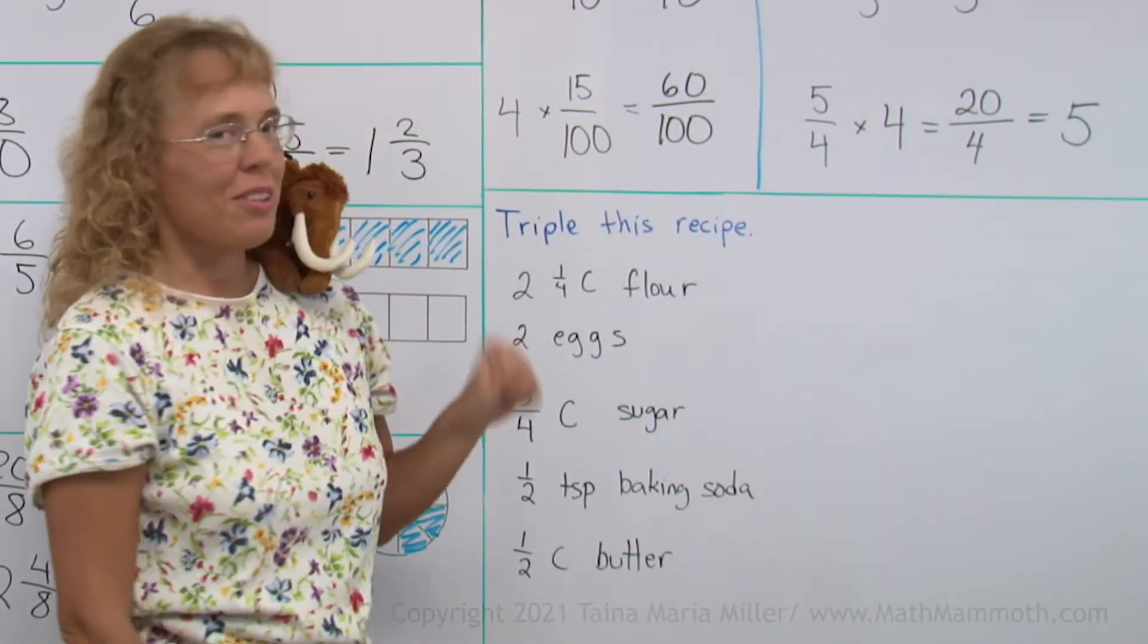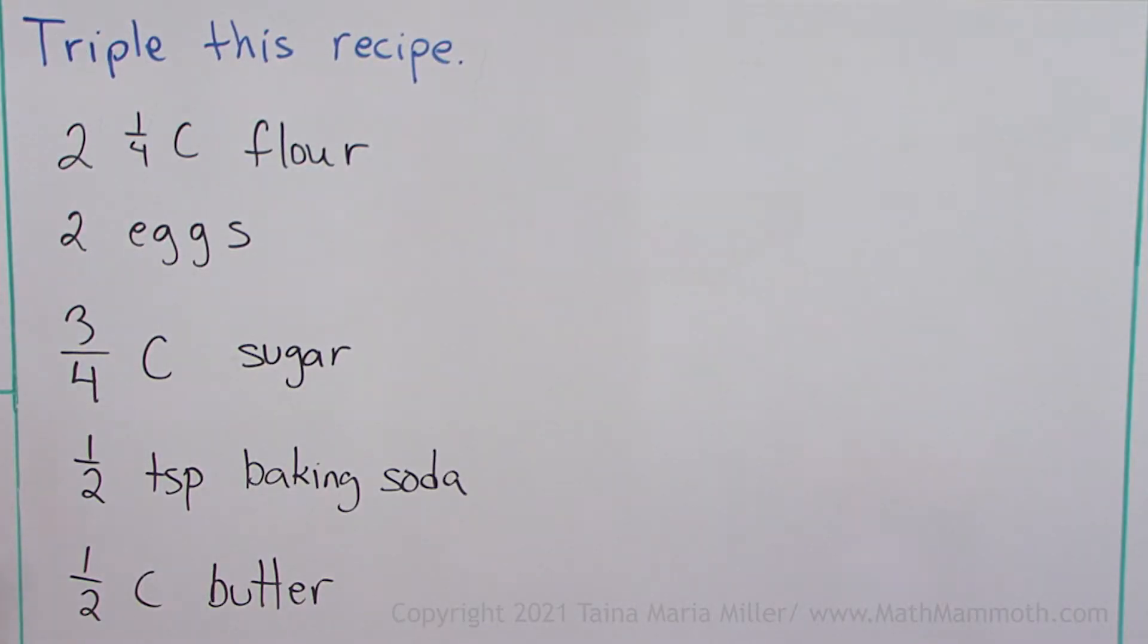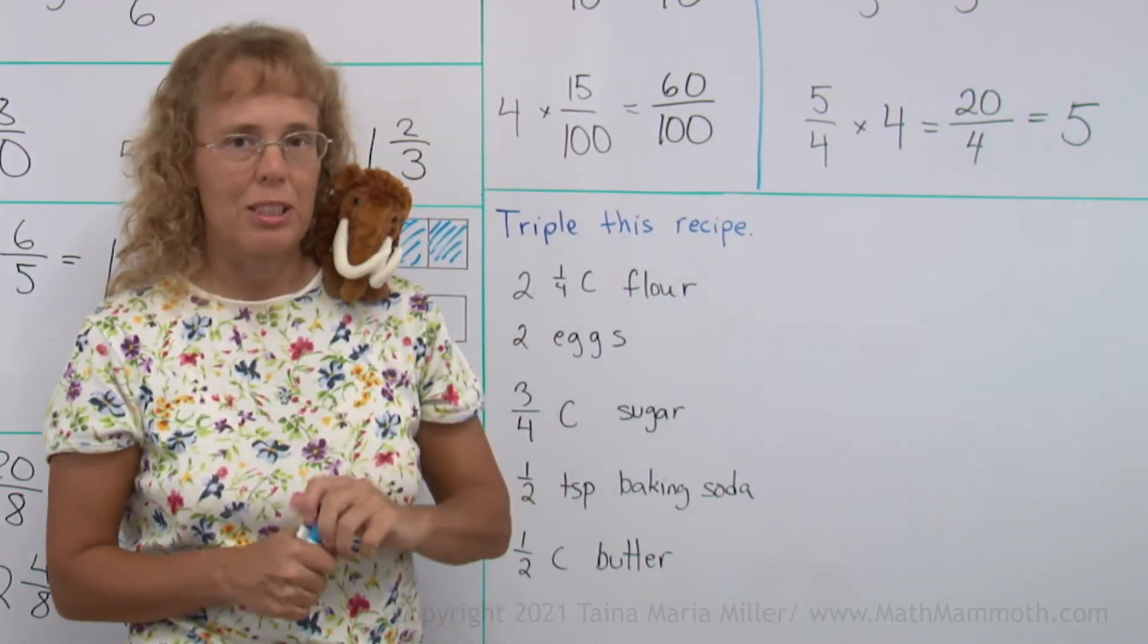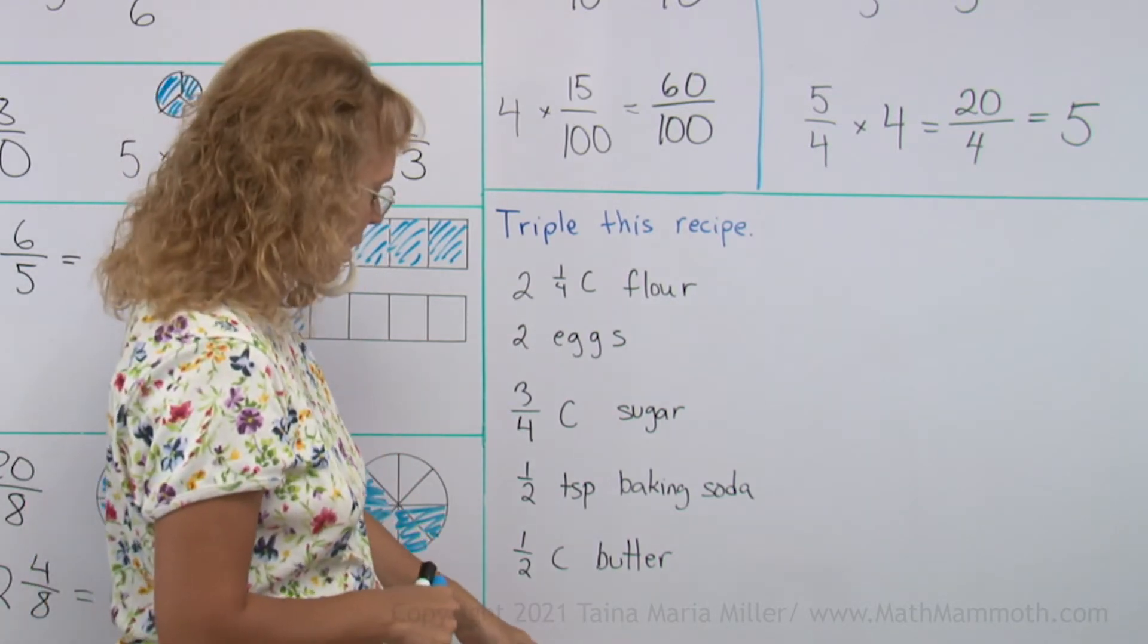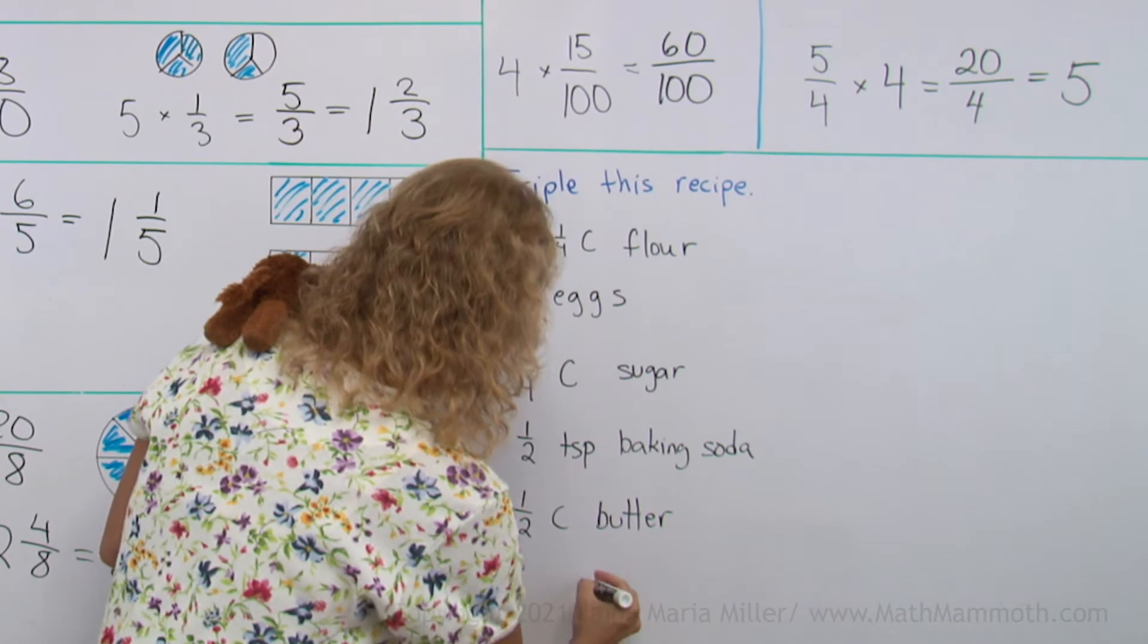We're going to triple this recipe. It means make it 3 times. If it is maybe a cookie recipe, flour, sugar, stuff like that. Oh, Matt is saying it must be blueberry cookie recipe. Well, yeah, maybe, but it doesn't have blueberries. Oh, okay, add blueberries to the recipe.